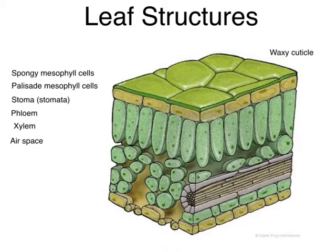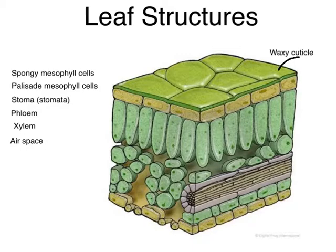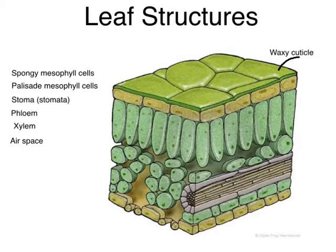The first thing on our list is the waxy cuticle. The waxy cuticle can be found at both the top and the bottom of the leaf. This part here, the darker or lighter green part on the top, is the waxy cuticle, and its purpose is to prevent water loss. Wax and water do not mix, so if you coat something in wax, the water can't escape — and that's what's happening with the leaf. The leaf is coated in a waxy substance, and that prevents water loss, except for where the plant wants there to be water loss.